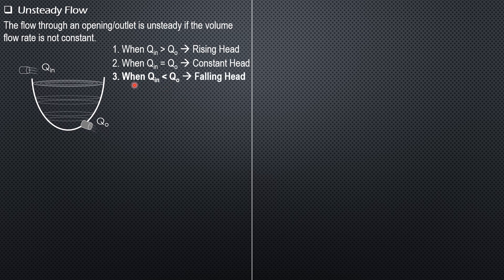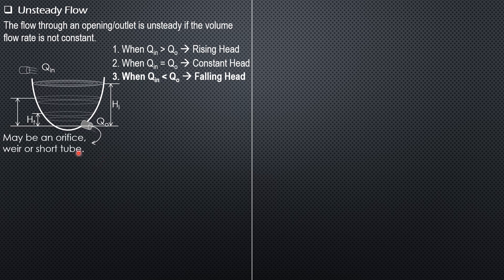In most cases, almost all problems belong to the falling head situation. The initial head is H_i, the final head is H_f, and in general the head at any time is H. The outlet may be an orifice, weir, or short tube. The surface area at any given time is also variable in general.